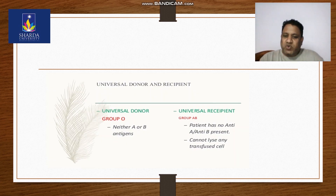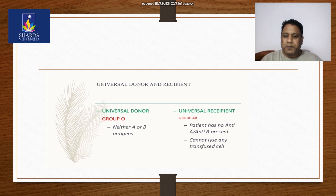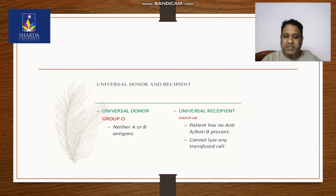Universal donor and recipient: as you all know, O group is a universal donor and the universal recipient is AB positive. O group has no A or B antigens present, and AB patients have no anti-A or anti-B present and cannot lyse any transfused cells.